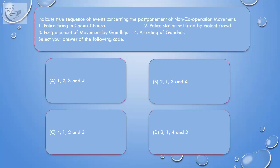Question: Indicate the true sequence of events concerning the postponement of non-cooperation movement. 1. Police firing in Chauri Chaura. 2. Police station set on fire by violent crowd. 3. Postponement of movement by Gandhiji. 4. Arresting of Gandhiji. Select your answer from the following codes: A. 1, 2, 3 and 4. B. 2, 1, 3 and 4.